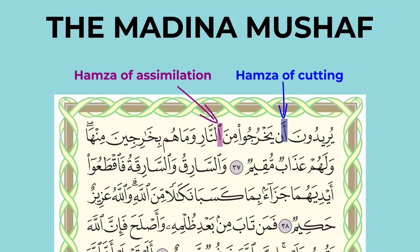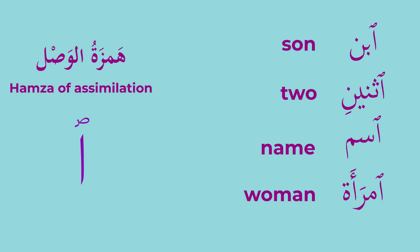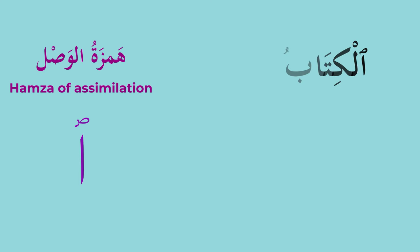So what is the difference? There are about eight or nine nouns in which, brothers and sisters, when Hamza comes, it is Hamzatul Wasan. We are going to learn it slowly. I will just introduce to you Hamzatul Wasan as it comes in the lesson, but I will try to explain in detail what happens with Hamzatul Wasan.